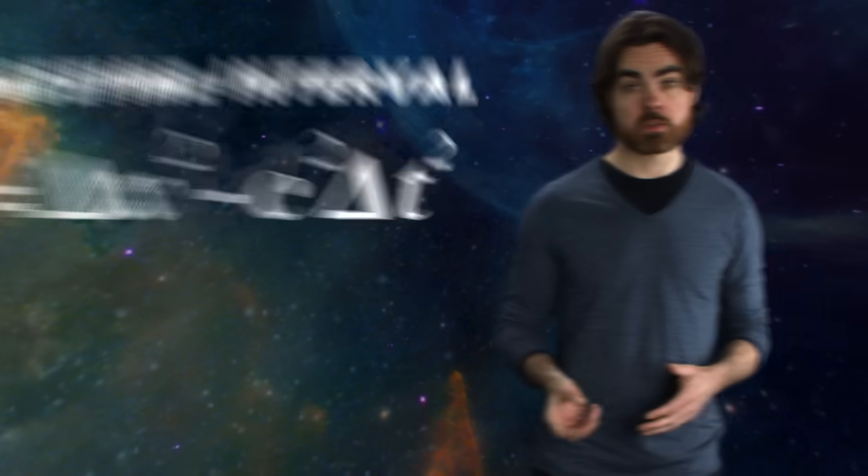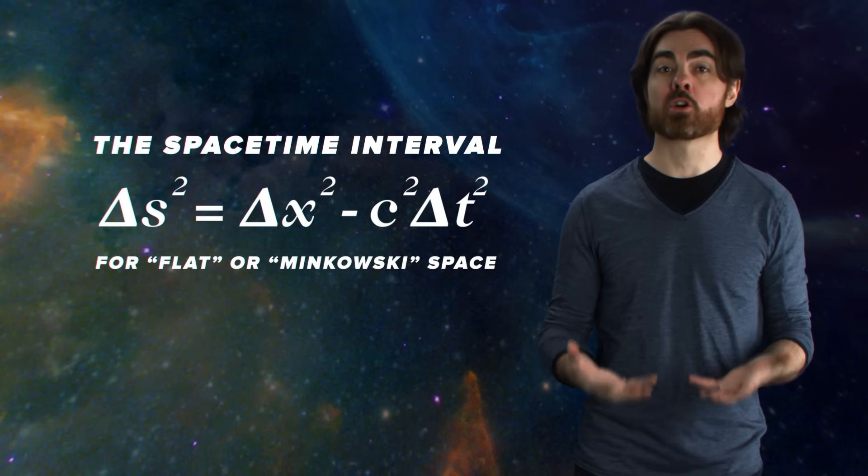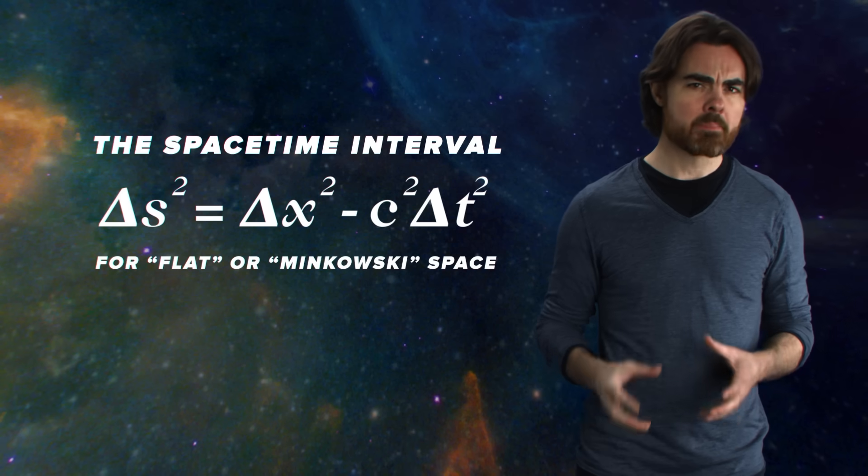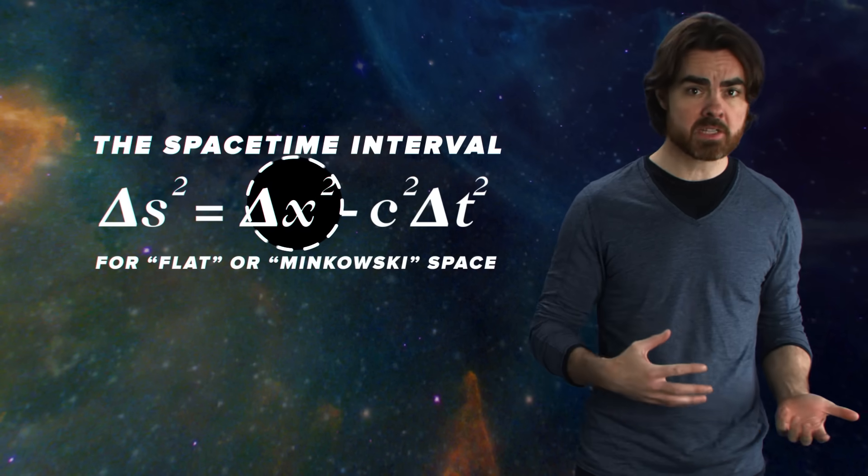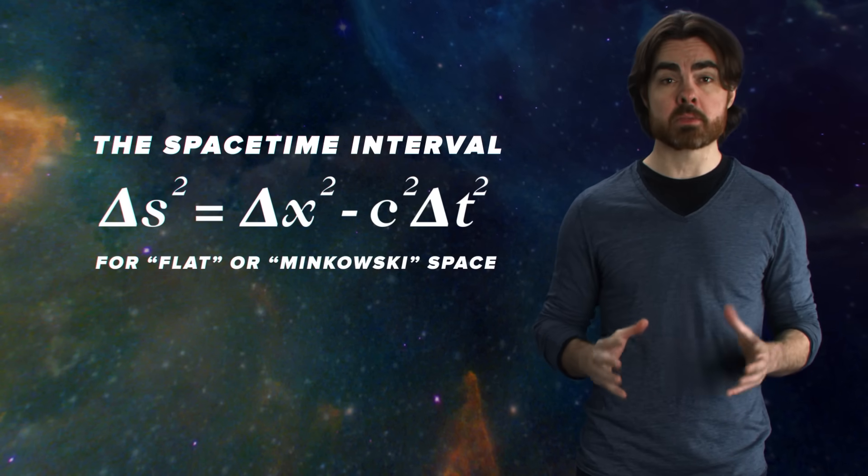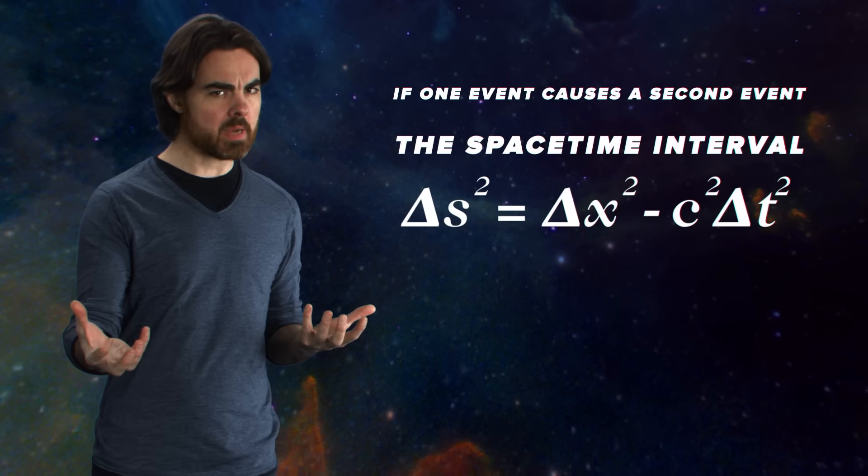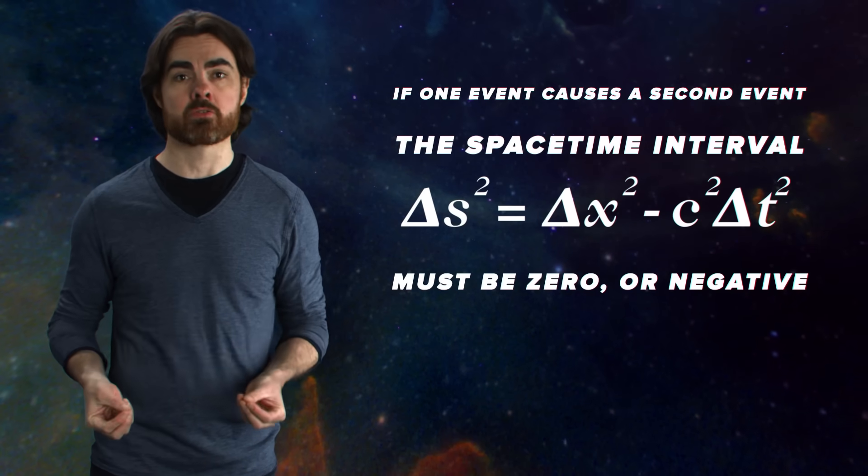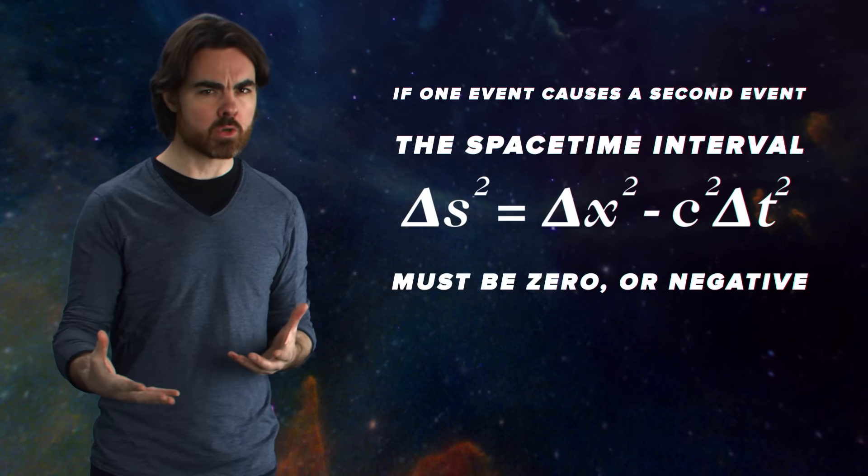The space-time interval is defined like this for boring old flat or Minkowski space. Different observers may report that two events are separated by different distances, delta x, and by different amounts of time, delta t. However, all observers record the same space-time interval. If one event causes a second event, the space-time interval must be zero or negative. That just means that a light-speed causal link may have traveled between them. You could say that an object at a given space-time instant is caused by whatever version of itself existed an instant earlier. So world lines of objects have decreasing space-time intervals. In fact, forward temporal evolution requires a negative space-time interval.